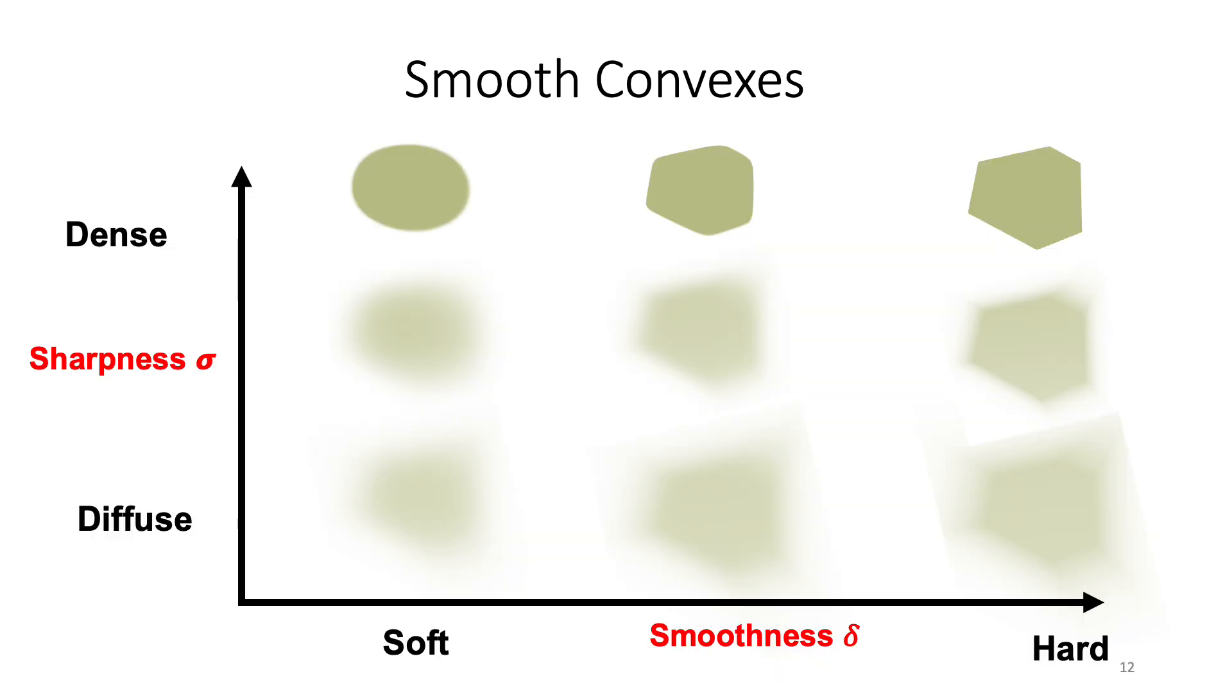And the smoothness parameter delta controls the roundedness and the effect of hard to soft edges of the smooth convex. So these two parameters, the smoothness parameter and sharpness are illustrated here. For example, you can see that the sharpness controls how things go from dense to diffuse, while the smoothness parameter delta controls how the smooth convex goes from soft to hard edges.